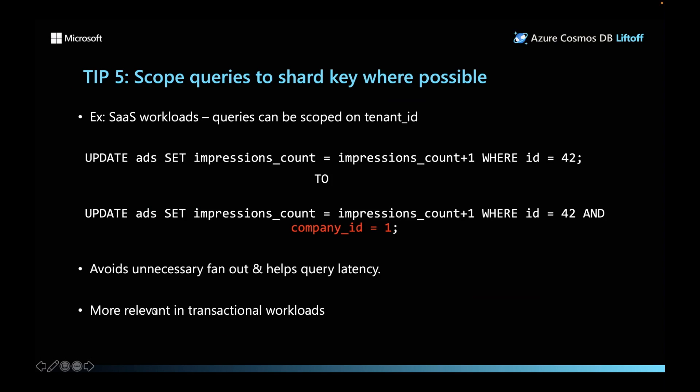Tip five is more related to queries: scope queries to shard keys where possible. The first four tips were about schema and table modeling. Wherever possible — for example in a SaaS workload — scope queries to the tenant ID or customer ID. Make sure to add that column in your filter. Here I have an example updating a table: adding the company ID filter in a multi-tenant workload is much more efficient. This avoids unnecessary fanout and improves query latency, especially relevant in transactional workloads where you want to optimize network latency by including the distribution column.